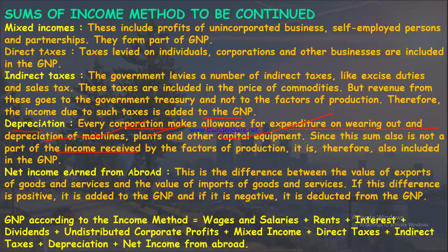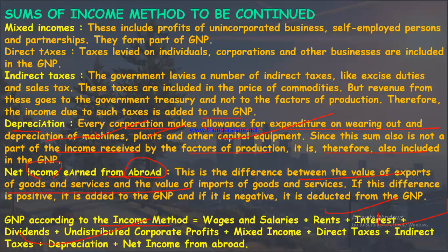The GNP formula under the income method is: GNP = Wages and salaries + Rent + Interest + Dividends + Undistributed corporate profits + Mixed incomes + Indirect taxes + Depreciation + Net income from abroad. These notes are structured to help students clear the ICSI foundation examination.